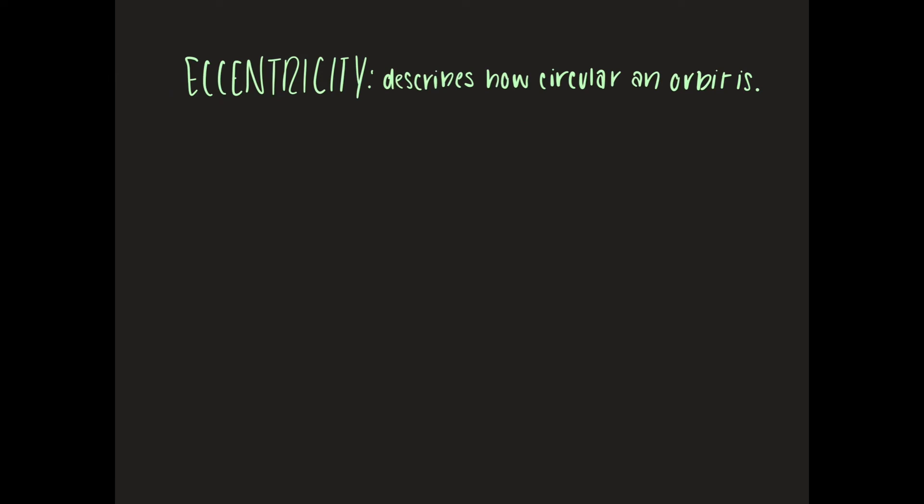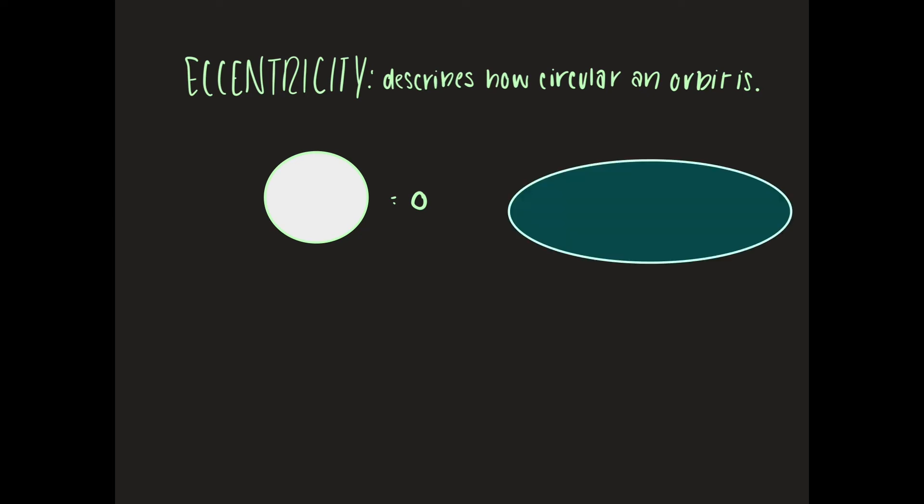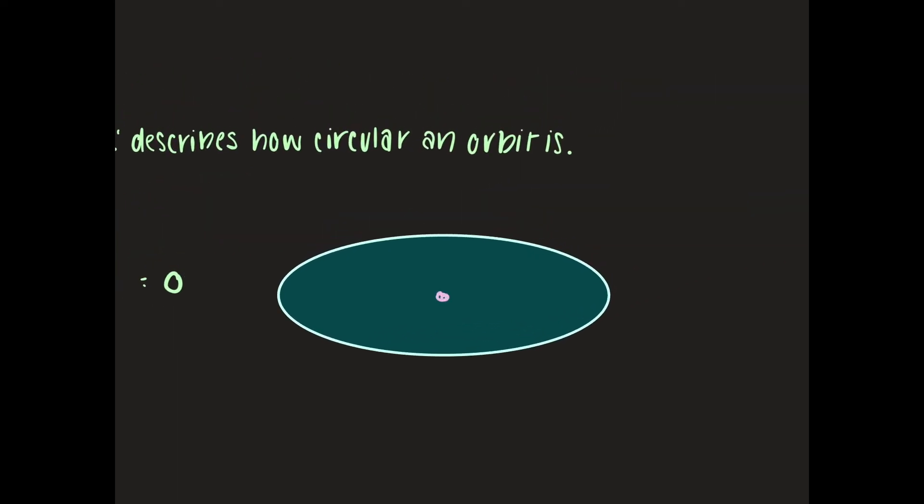So the definition of eccentricity is that it describes how circular an orbit is. If we take an example of an actual circle the eccentricity of this would be zero since that's basically our baseline, a circle has an eccentricity of zero. Not all planetary orbits are actually circles though which is why eccentricity is always varying. If we take the example of our ellipse once again, to understand this let's go back to an elliptical orbit.